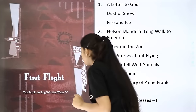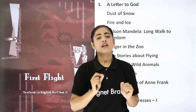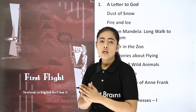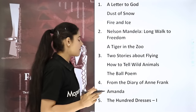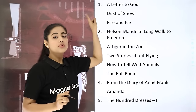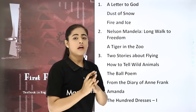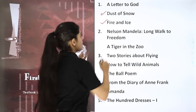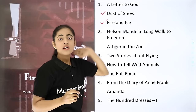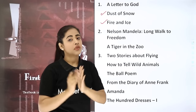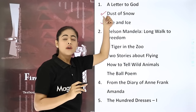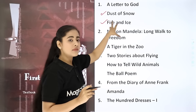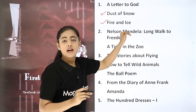Let's see which chapters are in our book First Flight. The first chapter is 'A Letter to God,' and within this chapter you have two poems given: 'Dust of Snow' and 'Fire and Ice,' both written by Robert Frost. So we are going to see today what 'A Letter to God' means and what is given in the poems 'Dust of Snow' and 'Fire and Ice.'